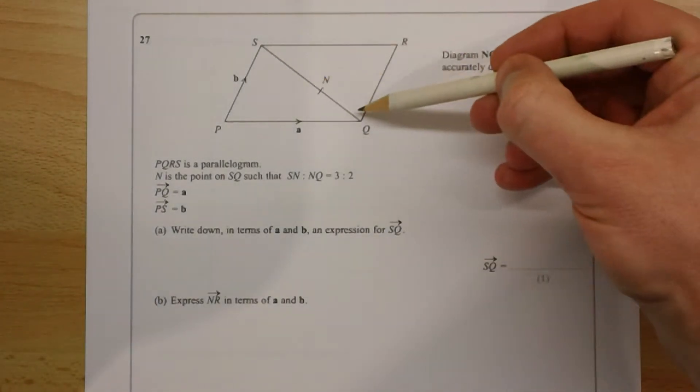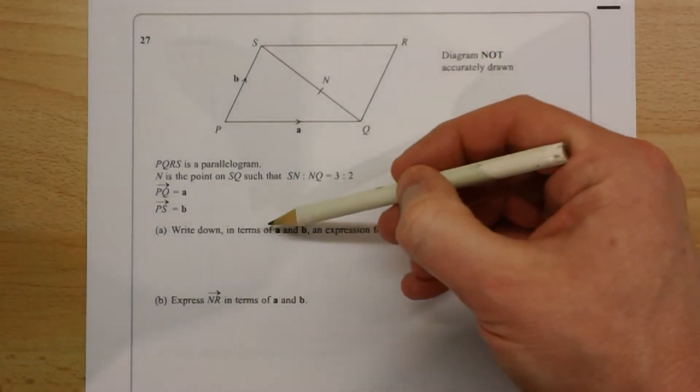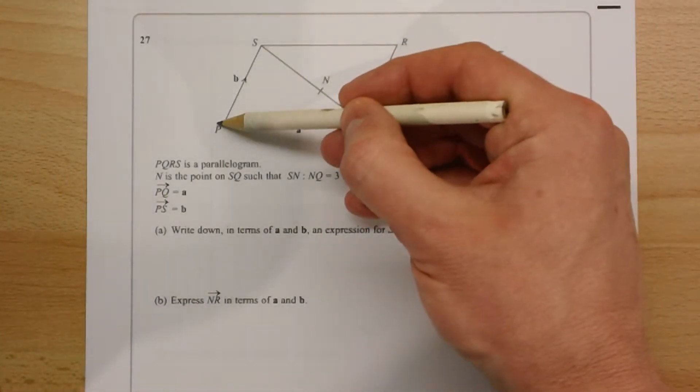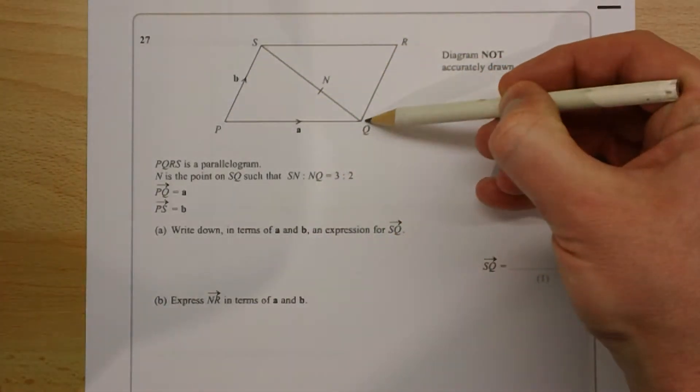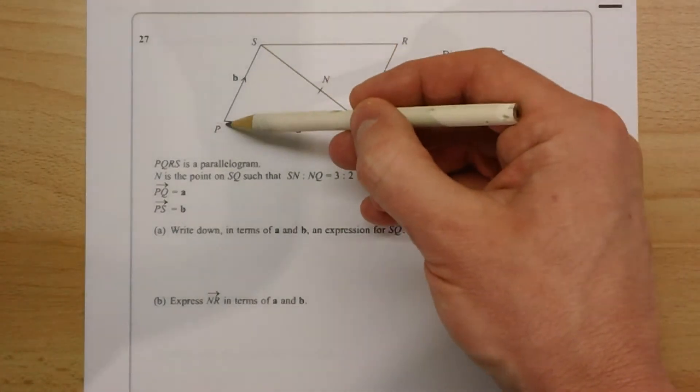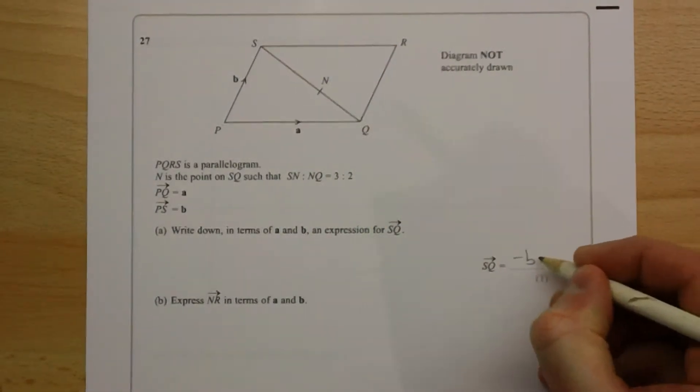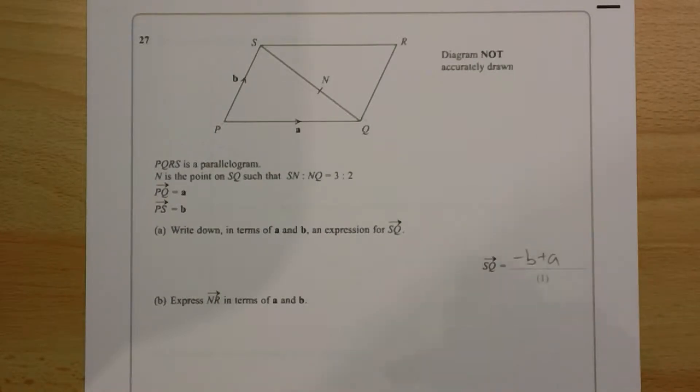To go from here to here, using the known vectors A and B, we have to go backwards down this vector, and then along this vector here. And when we go the opposite direction down a vector, we change the sign. So minus B plus A.